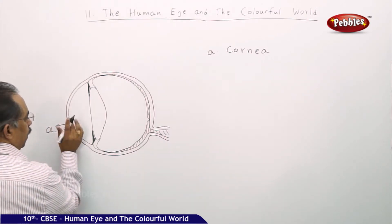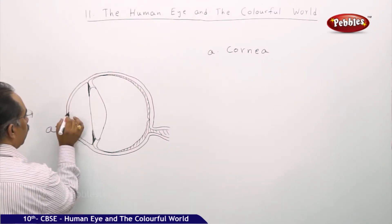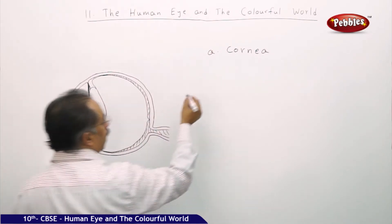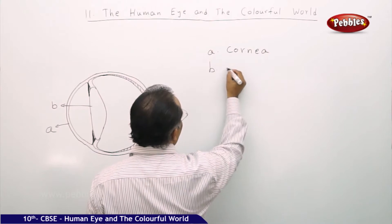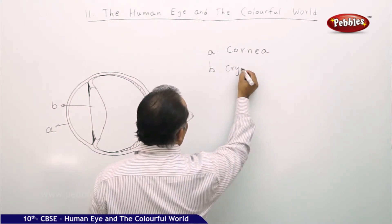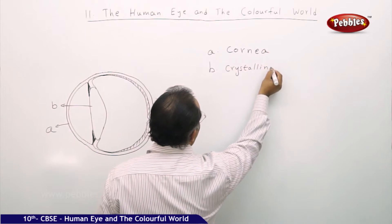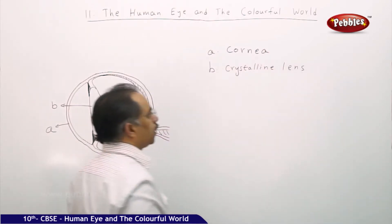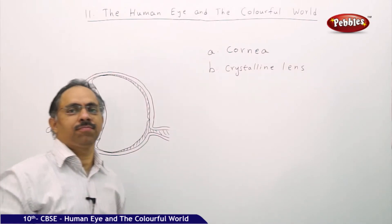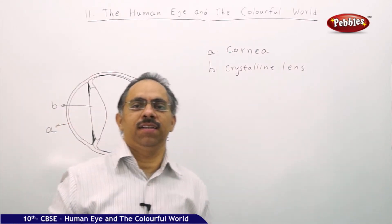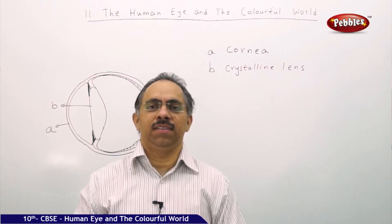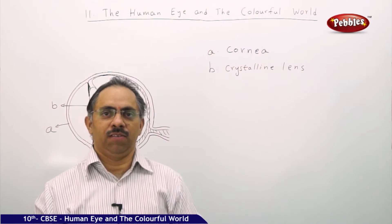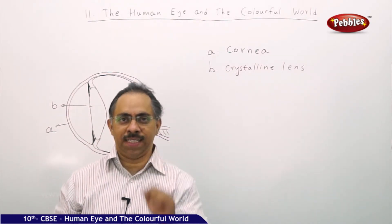The next part in the interior is this one — let us call it B. This is the crystalline lens, or simply the eye lens. It's not made up of any synthetic material. It's a transparent, jelly-like material. We can press it and its shape can be changed.